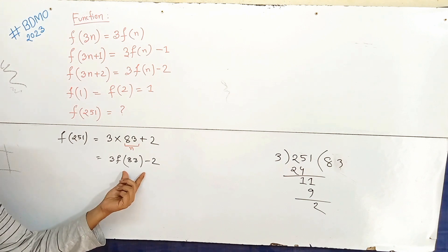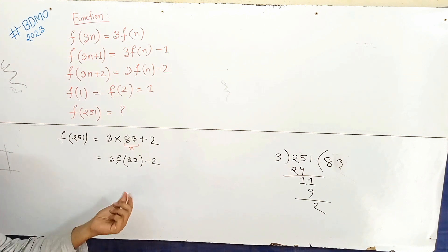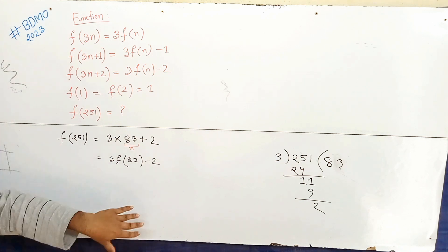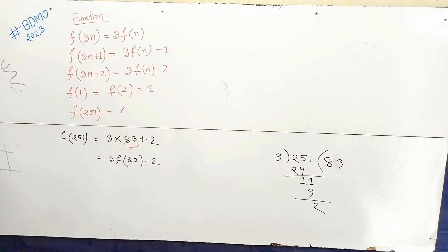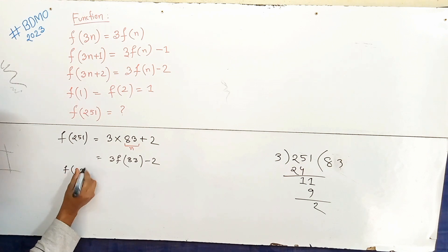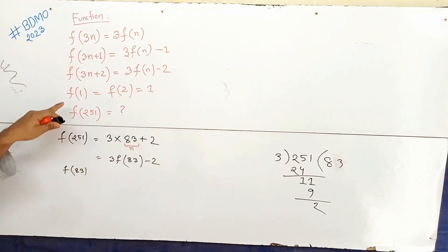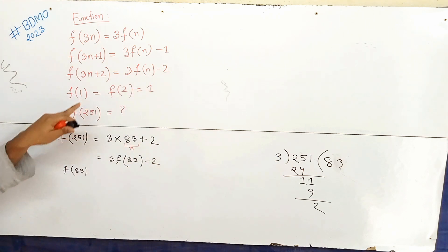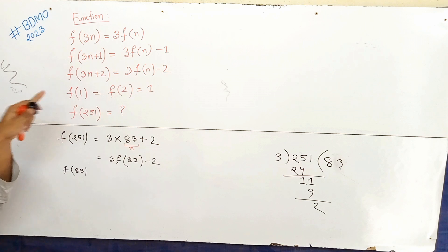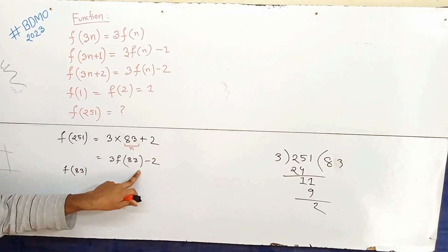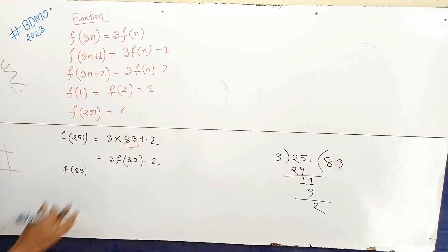Now, if we know f(83), we can write that down. When we compute step by step, we reduce through f(83), then f(27), down to f(9), f(3), and finally f(1) and f(2), which are known to be 1.